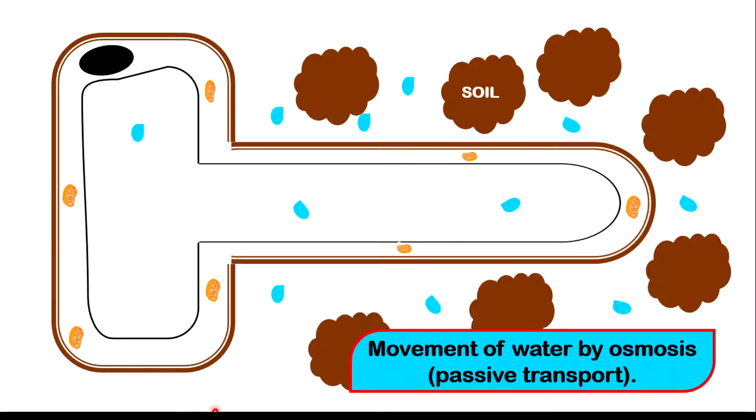Water is absorbed by osmosis, which is a passive transport. What this means is that this movement of water does not require any form of energy because the water molecules are moving from a higher concentration to a lower concentration. These blue particles represent water molecules.